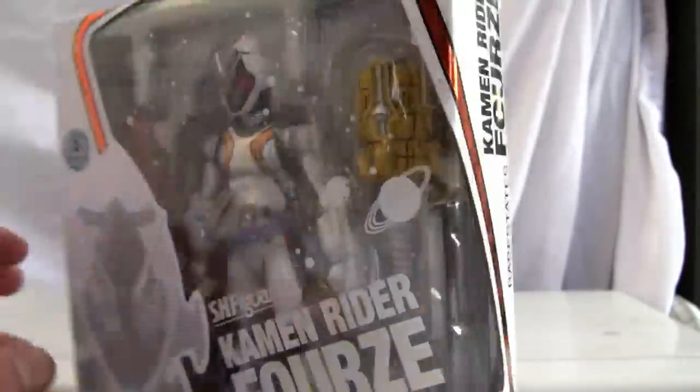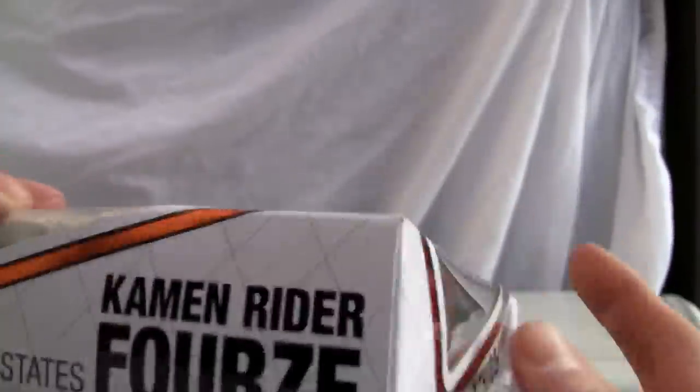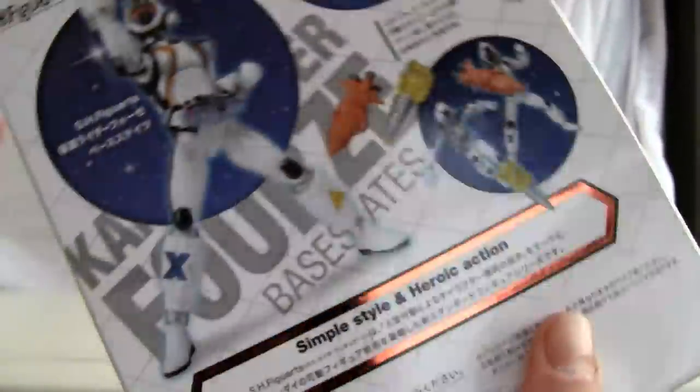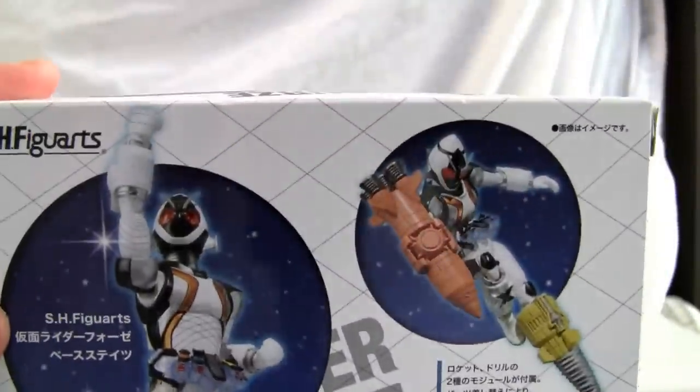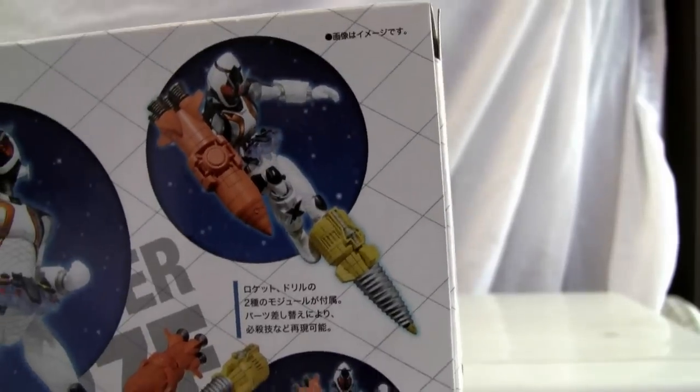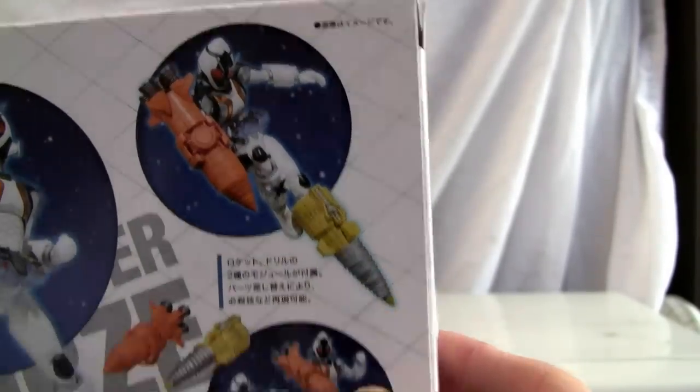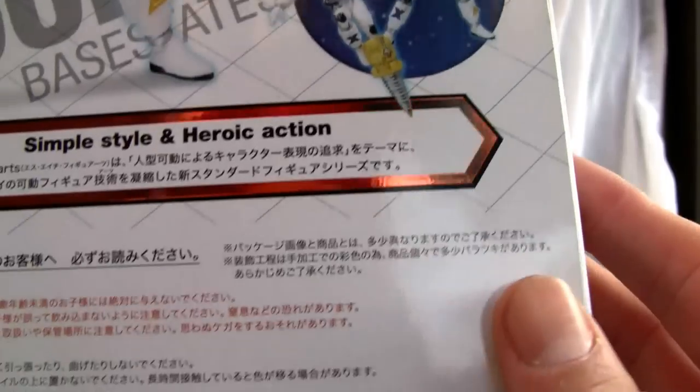Here's the side of the box, top of the box. This is a very plain box, a little disappointed about that, but you can see Forze with the rocket and the drill module. It does come with a little stand but you have to buy that and I wasn't gonna pay about 20 bucks just for the stand.